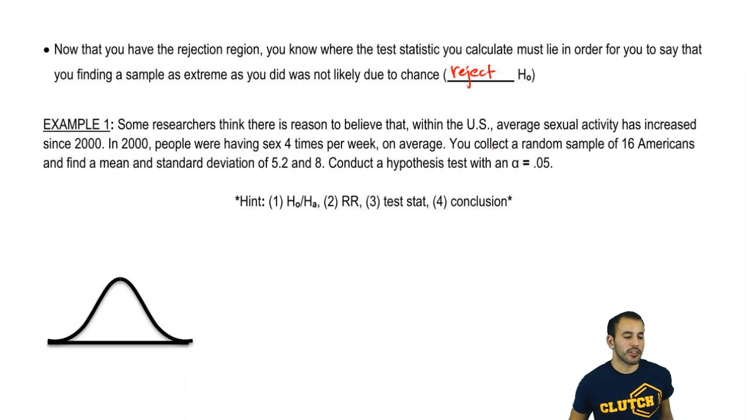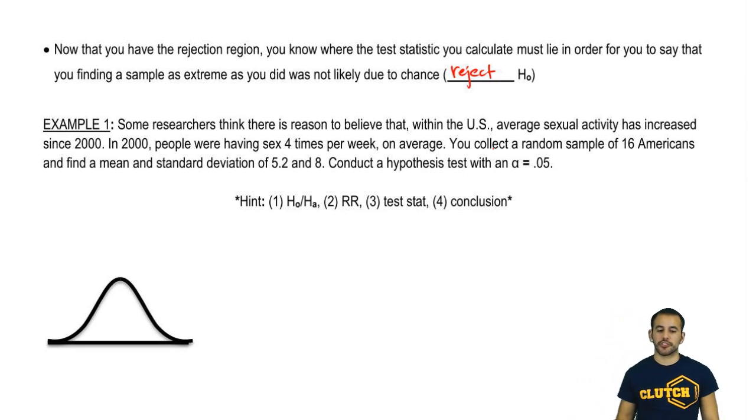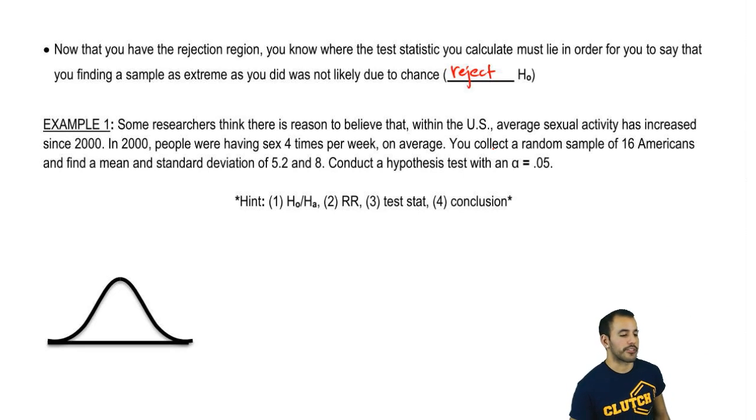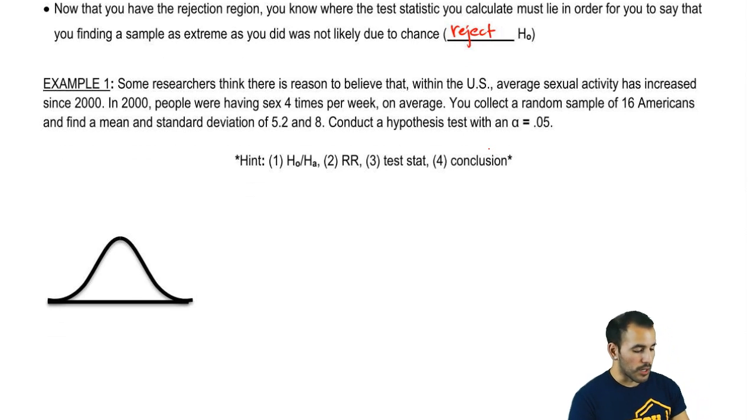So let's do an example. Some researchers think there's reason to believe that within the United States, this is very similar to the last one, I just changed the sample size, the average sexual activity has increased since 2000. In 2000, people were having sex four times a week on average. You collect a random sample of 16 Americans and find a mean and standard deviation of 5.2 and 8 per week. Conduct a hypothesis test using an alpha of .05. So let's do this, step one. Let's go ahead and get our null and alternate.